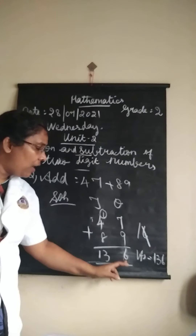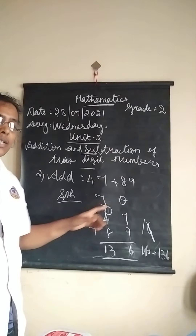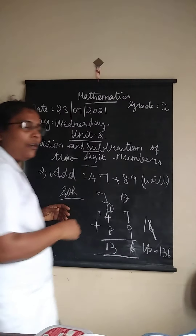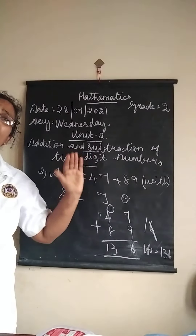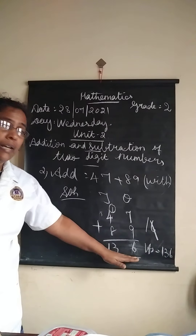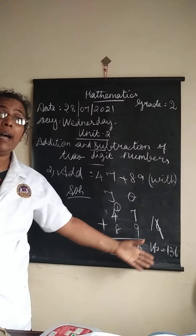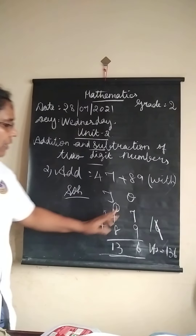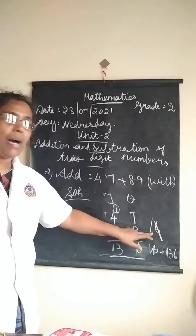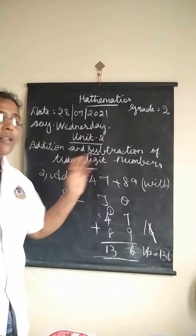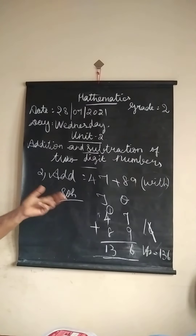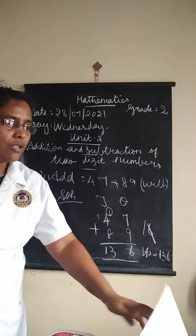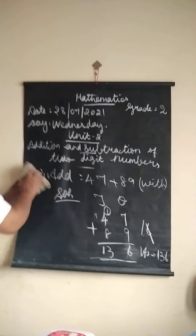Here we have balance. So this is called addition with regrouping. Do you know the difference between without and with? Without means when we are adding, if you do not have balance, we say that is without regrouping. But for this question, when we are adding, we get balance. So this is called with regrouping. Do you understand? Today we are going to study the next one — solve the following.